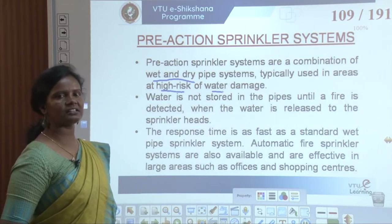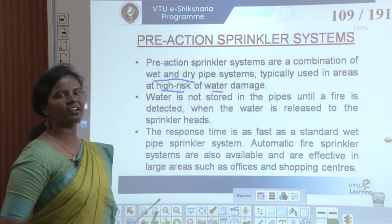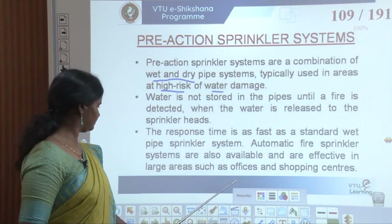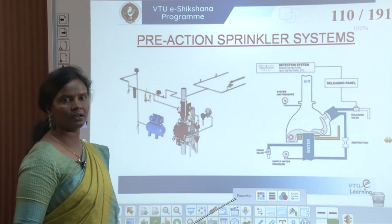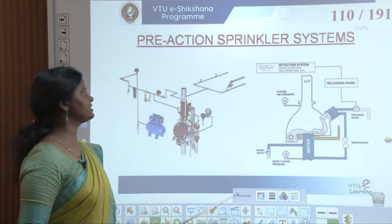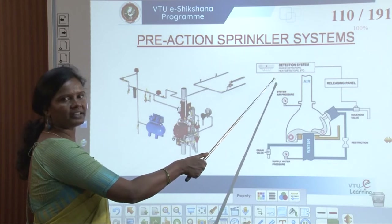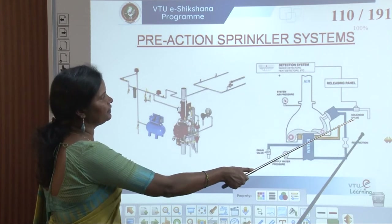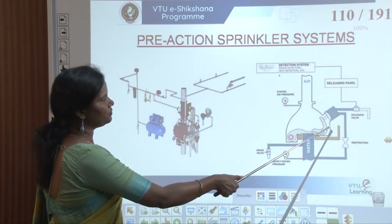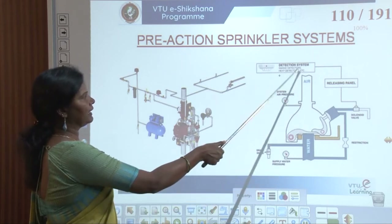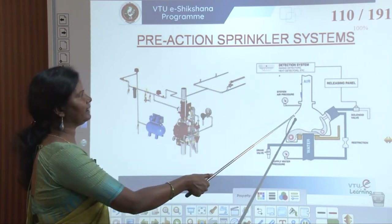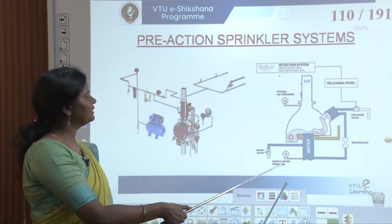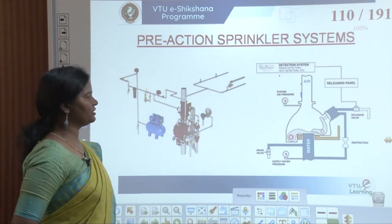Automatic fire sprinkler systems are also available and effective in large areas such as offices and shopping centers. In pre-action systems, when the smoke alarm or detection happens, there is a releasing panel, a valve control, and air running over the top — water is not present on top. Then there is system air pressure, drain valve supply, and water pressure.